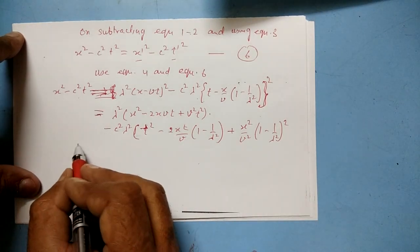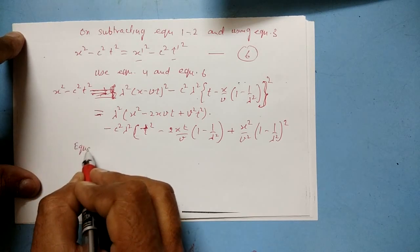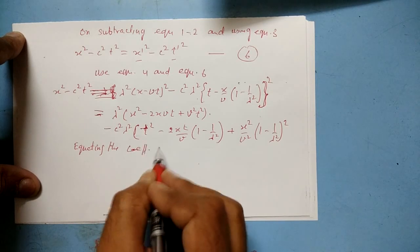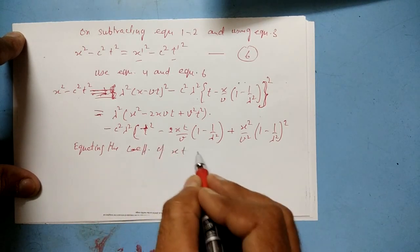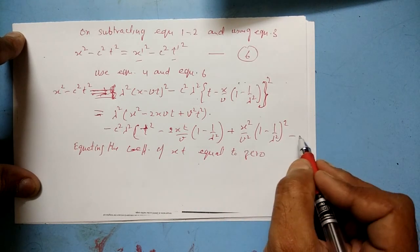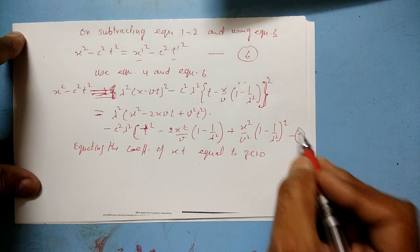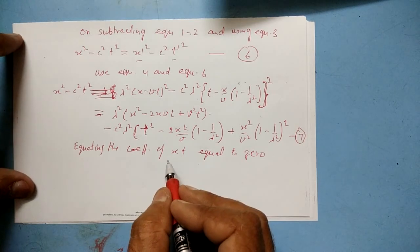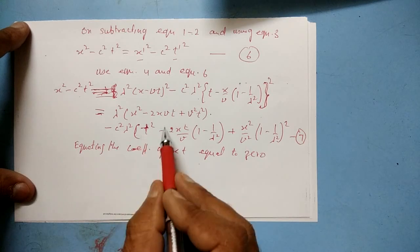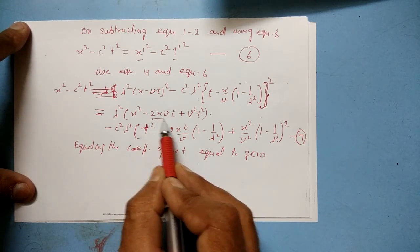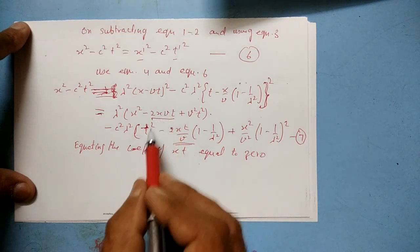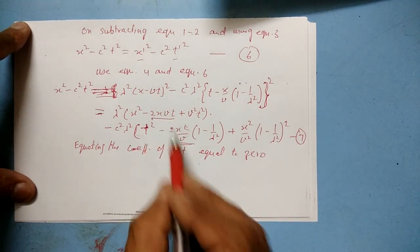Now we equate the coefficient of the xt cross-term to zero in equation number 7. The xt terms are identified and set equal to zero.